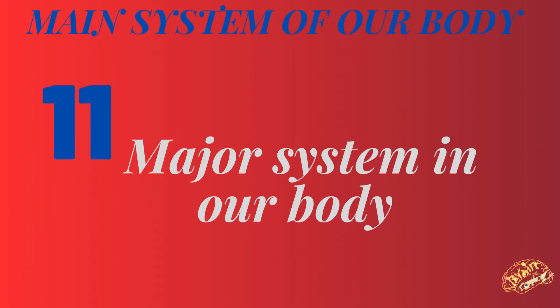Let's discuss about the basic systems of the body. Major systems in our body include 11 systems. Let's look into an overview of each one by one.